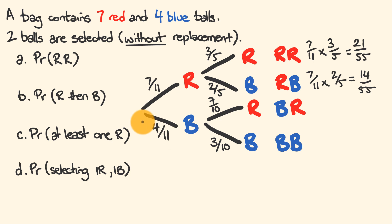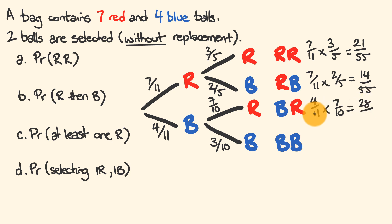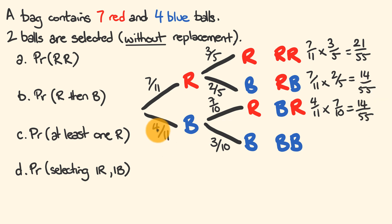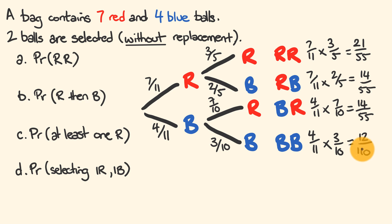Blue then red: 4/11 × 7/10 = 28/110, which simplifies by dividing by 2 to 14/55 — the same as red then blue. Blue then blue: 4/11 × 3/10 = 12/110, which simplifies to 6/55.